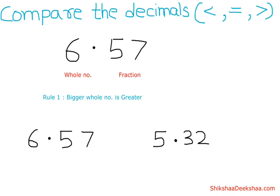we have this digit as the tenths digit, this is the hundredths digit, then comes the thousandths digit, and so on.